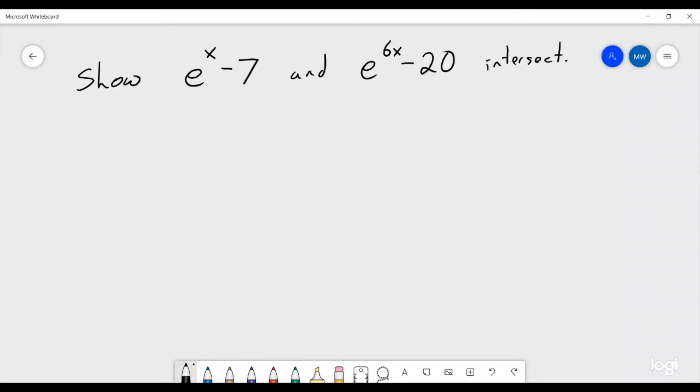So if we're trying to show that these two functions intersect, if we were to look at the graph of them, we'd have e^x - 7, and then we'd have e^(6x) - 20 doing something like this.